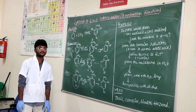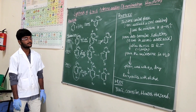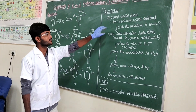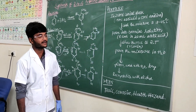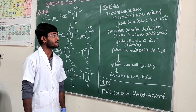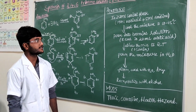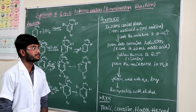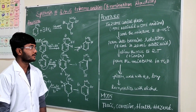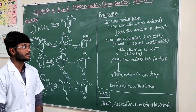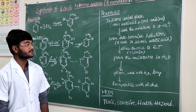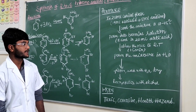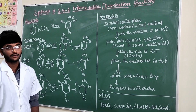In this session, I am going to explain how to synthesize 2,4,6-tribromoaniline from aniline. In a 250 ml conical flask, take 90 ml of acetic acid and 5 ml of aniline. Then prepare the bromine solution — 8.5 ml of bromine in 20 ml of acetic acid. Cool the reaction mixture to room temperature, approximately 10 to 15 degrees.